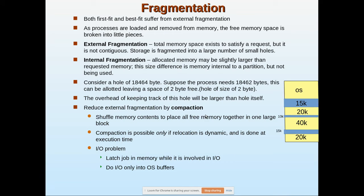To reduce external fragmentation, we use compaction. All these memory blocks are put together — the process-allocated spaces are moved up so that all the holes are combined into one large free block. This shuffling of memory content to place all free memory together is called compaction.